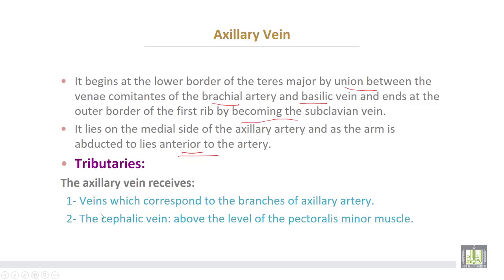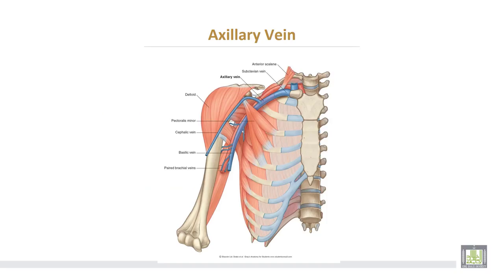Tributaries of the axillary vein: the axillary vein receives veins corresponding to the branches of the axillary artery, and the cephalic vein above the level of the pectoralis minor muscle. The axillary vein starts at the lower border of the teres major, ascends upward, and at the outer border of the first rib continues as the subclavian vein.